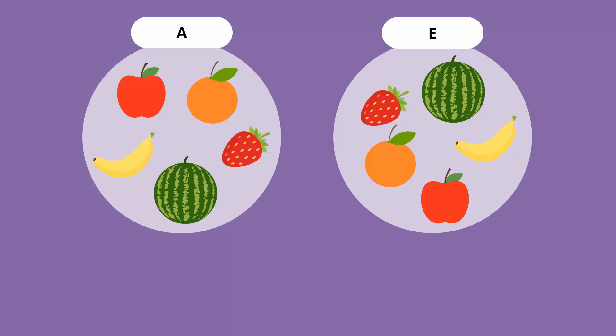Observe that both contain an apple, an orange, a banana, a watermelon, and a strawberry. In other words, both contain identical elements.